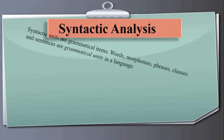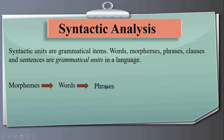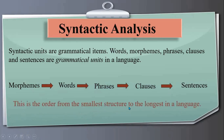In syntactic analysis, the grammatical units of a language are morphemes, words, phrases, clauses, and sentences. These are the units that make up sentences. Morphemes make words, words make phrases, phrases make clauses, and clauses make sentences. This is the order from the smallest structure to the largest: the smallest unit is the morpheme and the largest is the sentence.